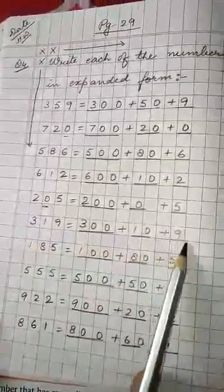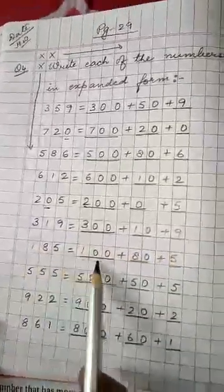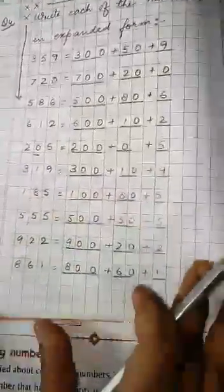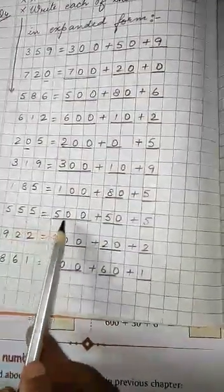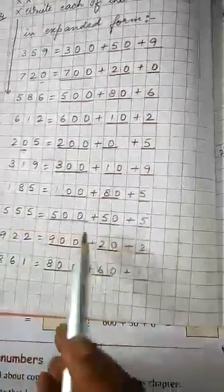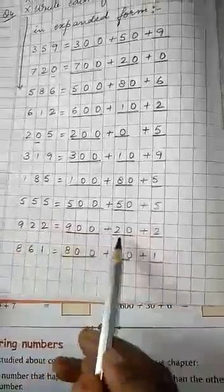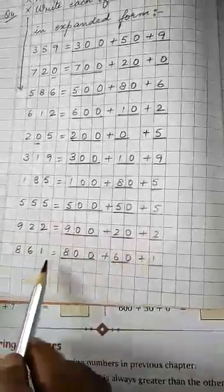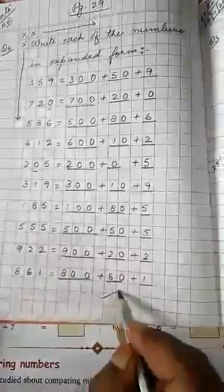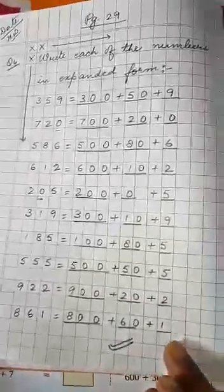185: 100 plus 80 plus 5. 555: 500 plus 50 plus 5. 922: 900 plus 20 plus 2. 861: 800 plus 60 plus 1. So up to here you check your homework. Okay, children.